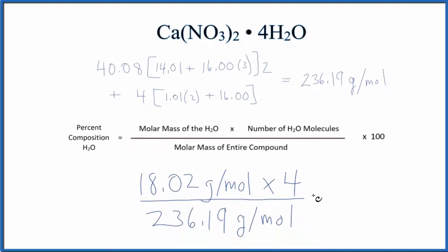We'll multiply this by a hundred to give us the percent. Notice that grams per mole is on the top and the bottom, so it cancels out.